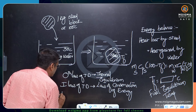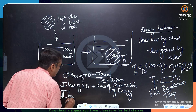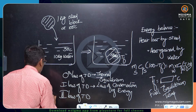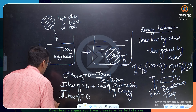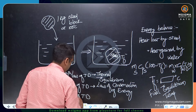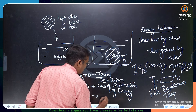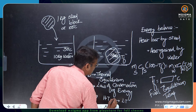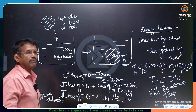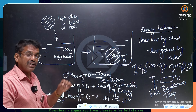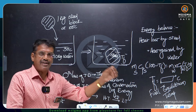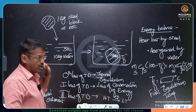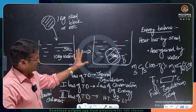The second law of thermodynamics — particularly the Clausius statement — states that heat always flows from high temperature to low temperature. This is the direction of heat transfer. Heat must happen from high temperature to low temperature, which is from the steel block at 100°C to the water at 30°C. All three laws of thermodynamics are observable in this problem.